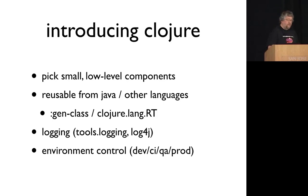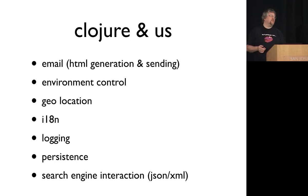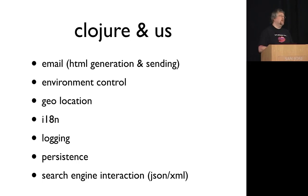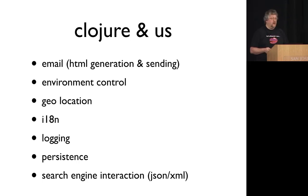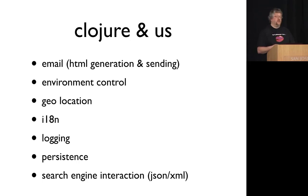Where we are today: we do quite a lot of stuff with Clojure, including some surprising things. We generate a lot of rich HTML emails from the dating platform using Enlive for templates. It's all multilingual, so we've written our i18n handling code in Clojure so we can reuse it in ColdFusion and side components. We also handle geolocation using a mixture of databases and third-party services, and we've wrapped all that up, plus logging, persistence, and search engine interaction.